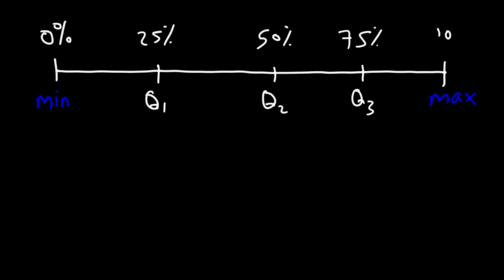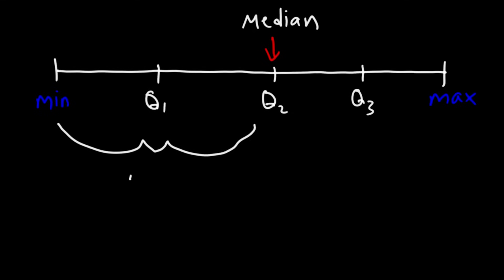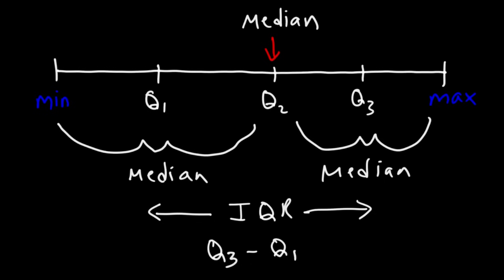So how do we find Q1, Q2, and Q3? Q2 is basically the median of the entire data set. Q1 is the median of the lower half of the data set, and Q3 is the median of the upper half of the data set. The interquartile range, represented by IQR, is the difference between Q3 and Q1. Once you find Q1 and Q3, you can calculate the interquartile range.